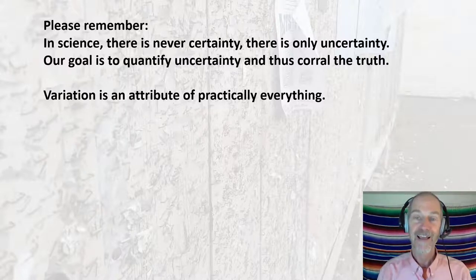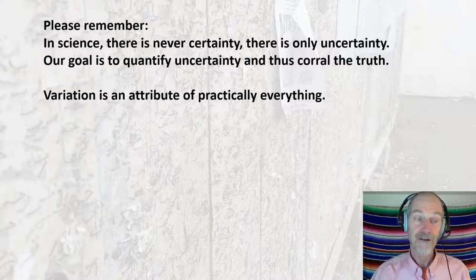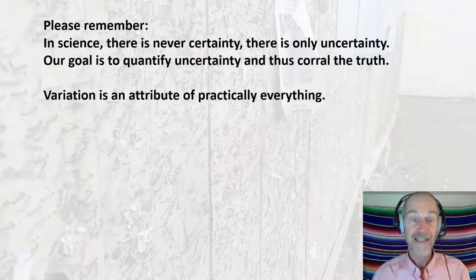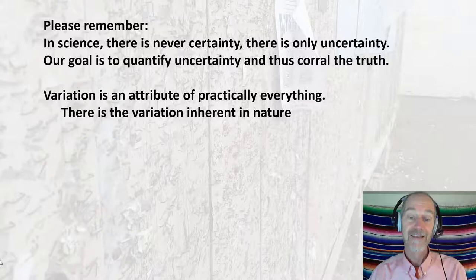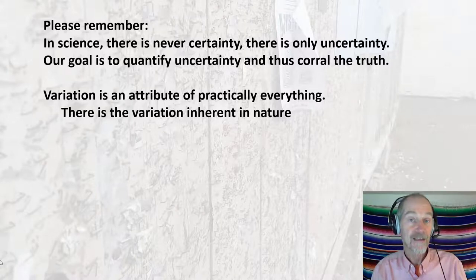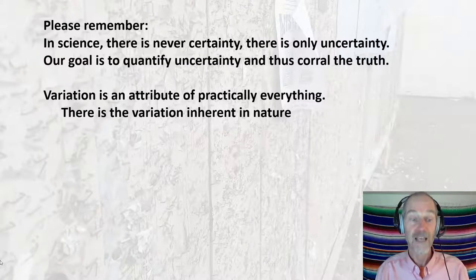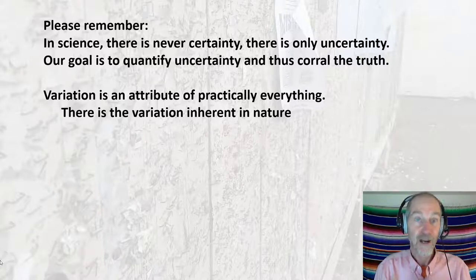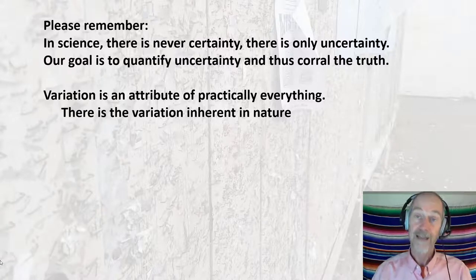We want to quantify uncertainty and corral the truth. I'm not going to give you a full rundown because that's all sampling and statistics you've already had, and you'll be doing it this year in your RES projects. But just a reminder: variation is an attribute of practically everything. For example, there's the variation inherent in nature — when you go into the Arcata Community Forest, some trees are close together, others are far apart. Some parts have more salamanders than others. Look at the distribution of ferns: there's variation. Almost nothing except a crystal lattice in a mineral lacks variation in nature.